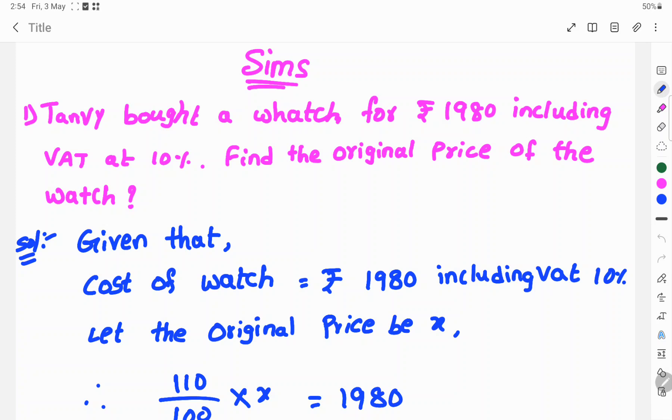Here, given the watch value including VAT, we need to find the original price of the watch. Let's see the solution. Given that cost of watch equals Rs. 1980 including VAT at 10%, let the original price of the watch be X.